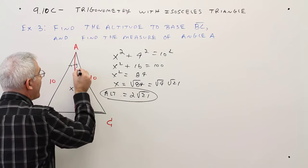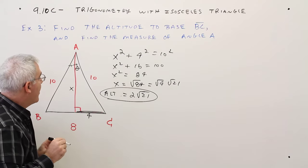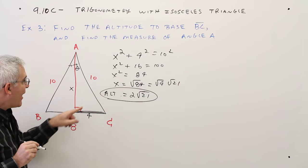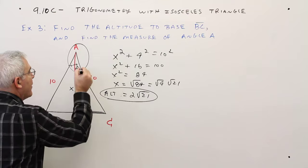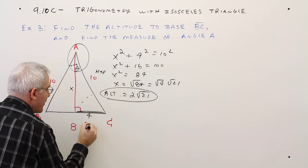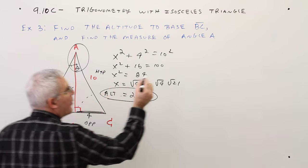For right now, I'll just call that angle theta. So a side I know, a side I know, let's label this. This is the hypotenuse. This is the opposite. Let me write SOHCAHTOA.